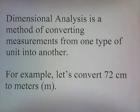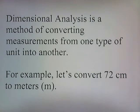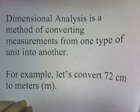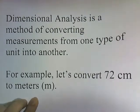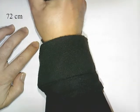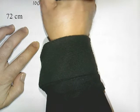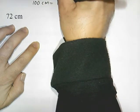Let's say we measure something in centimeters and we want to convert it into meters. Let's do a problem where we convert 72 centimeters into meters. To start out, we need to be cognizant of a certain equality. If we're going to convert meters to centimeters, we need to know how many centimeters make a meter: 100 centimeters equals 1 meter.